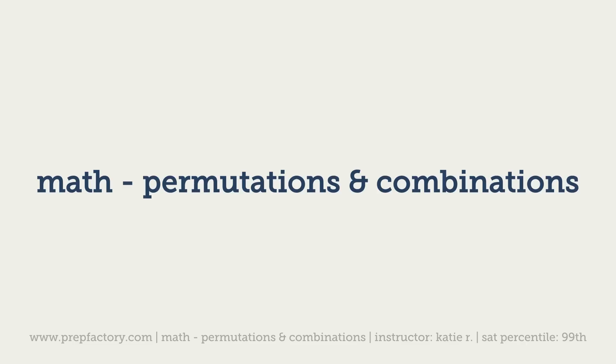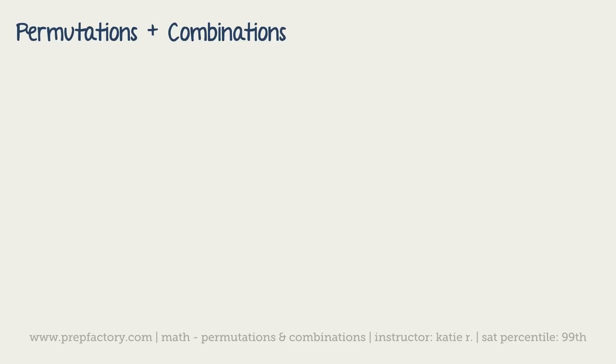Okay, our very last math topic is permutations and combinations. There's basically three separate types of them and we'll go over all three. Permutations - order matters, so we care about order. In combinations, order doesn't matter.